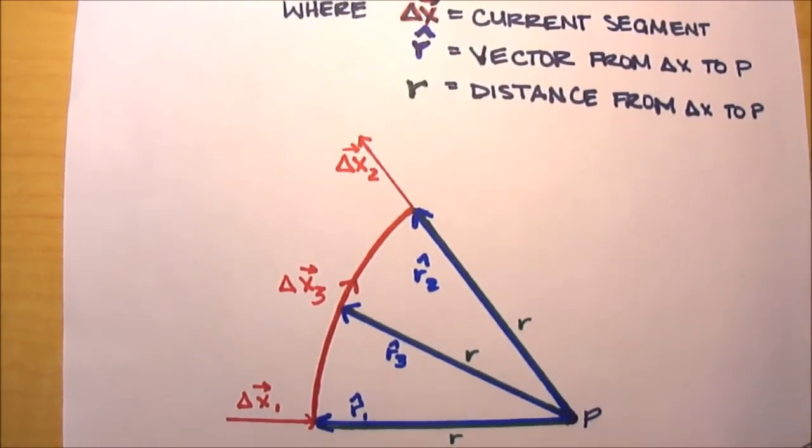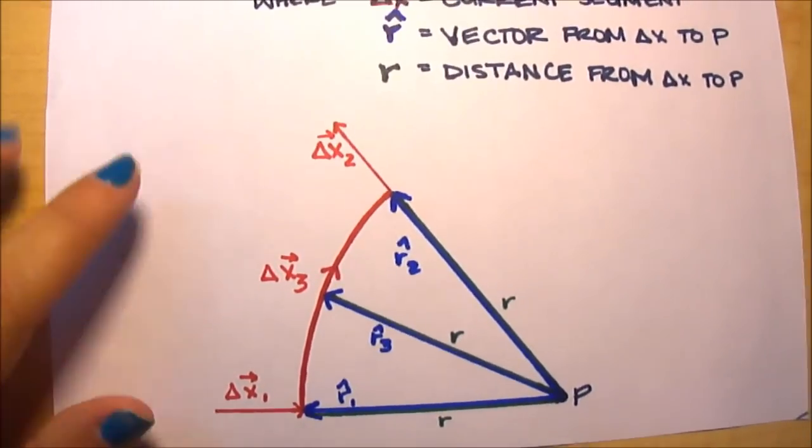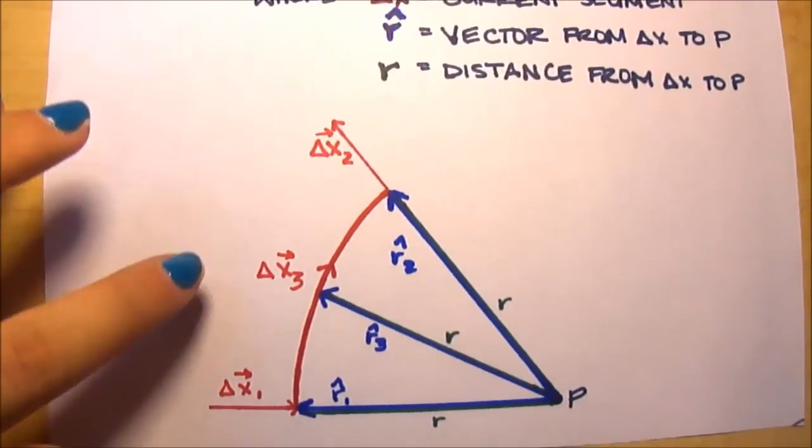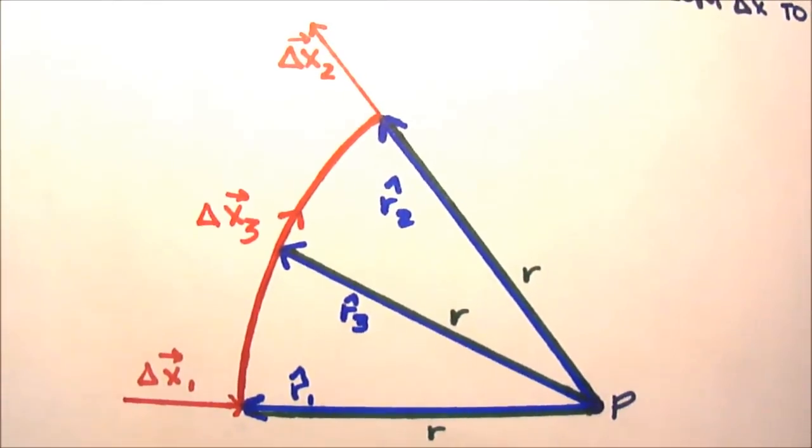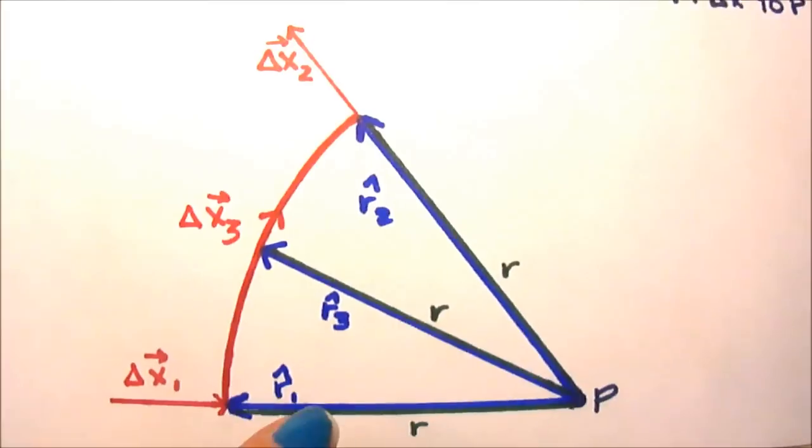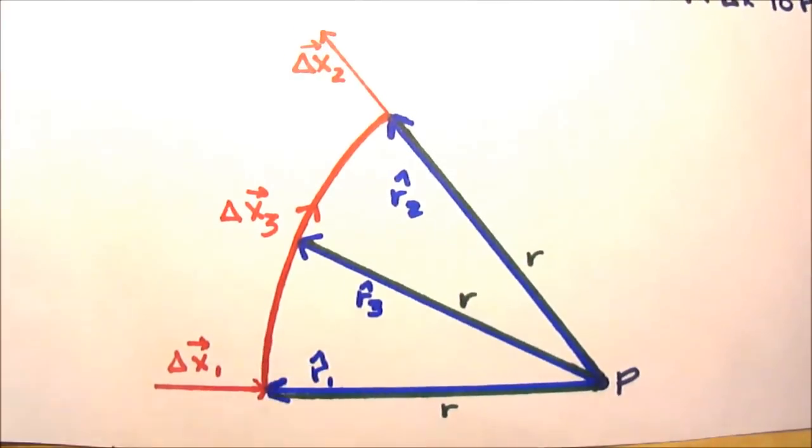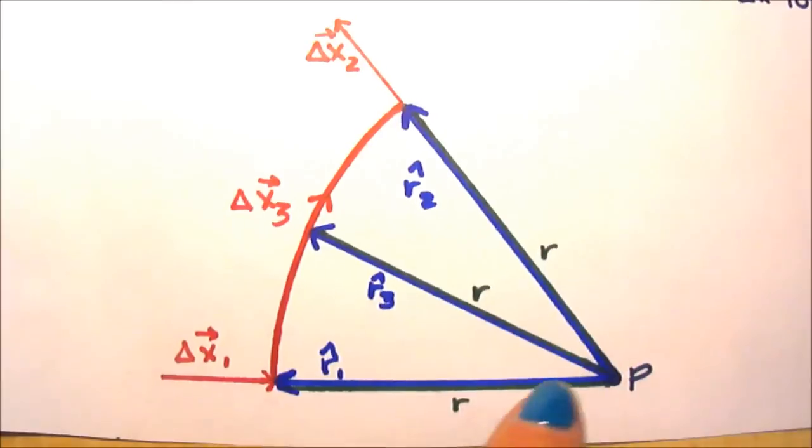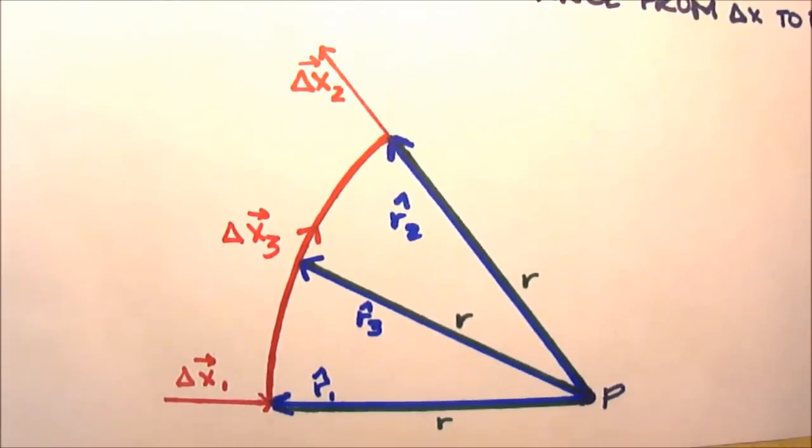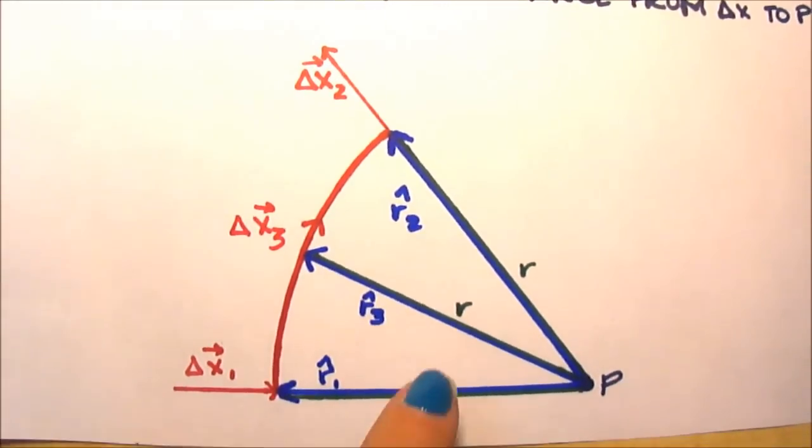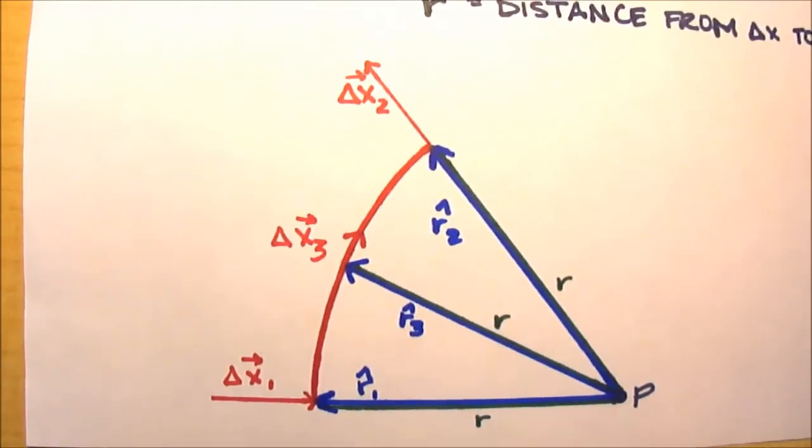Now in this diagram, I've broken the current segment into three different currents: Δx₁, Δx₂ up here, and Δx₃. I've also included their corresponding r̂ vectors. As you can see here, r̂₁, r̂₂, and r̂₃. And as you can see, they all go from point P to the current segment. The individual distances are also drawn in, but since this is radial, we know that the distances are all the same.